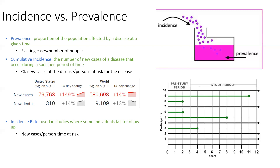Prevalence is the number of people that actively have a disease at a given time. You see this with statistics like 'one in three Americans lives with a mental illness' — they're not saying one in three is diagnosed every day, but that one in three actively has a mental illness.